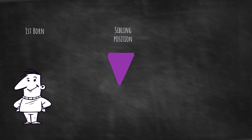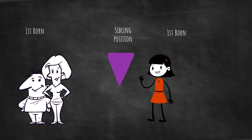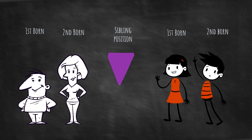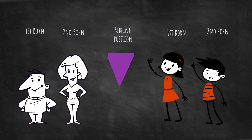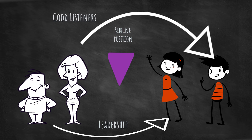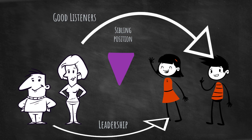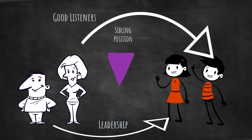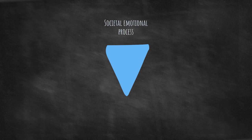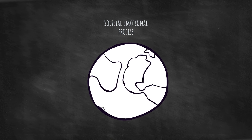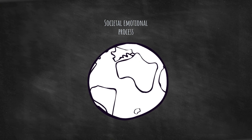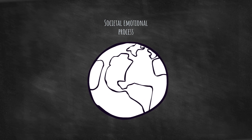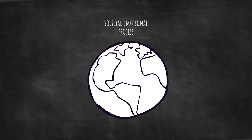People who grow up in the same sibling position predictably have important common characteristics. The characteristics of one position are not better than those of another, but rather are complementary. Each concept in Bowen theory applies to non-family groups such as work and social organizations.